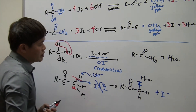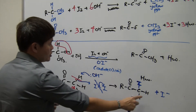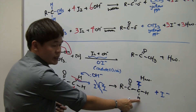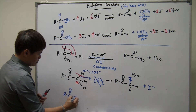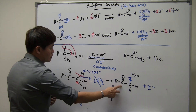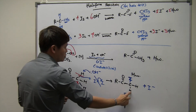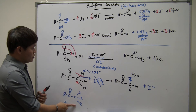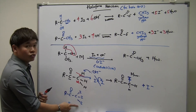This process repeats itself two more times, so that the other two alpha hydrogens are also replaced by iodine. The final result is that all three H's on the alpha carbon have been replaced by three iodines, giving a CI₃ group.